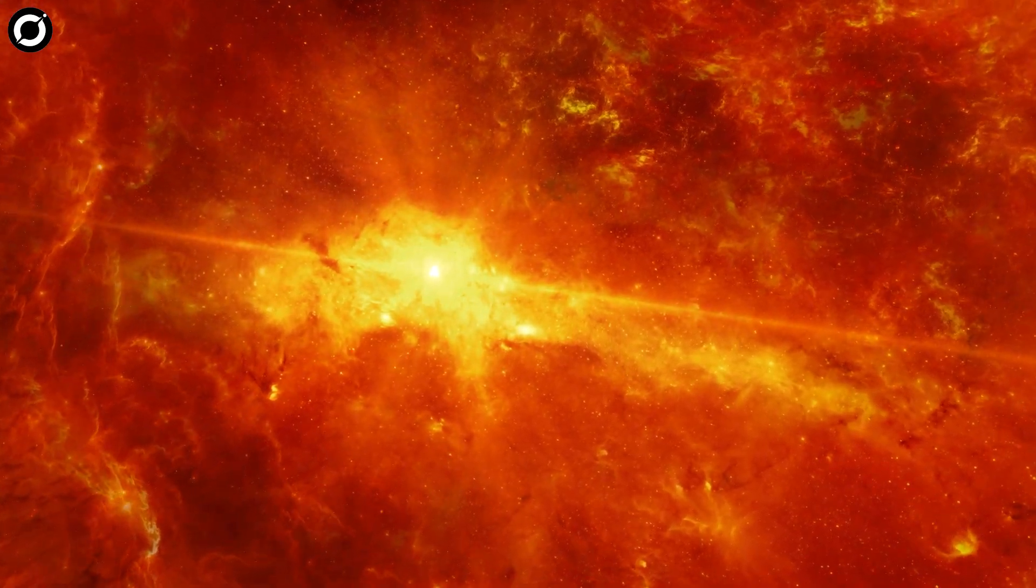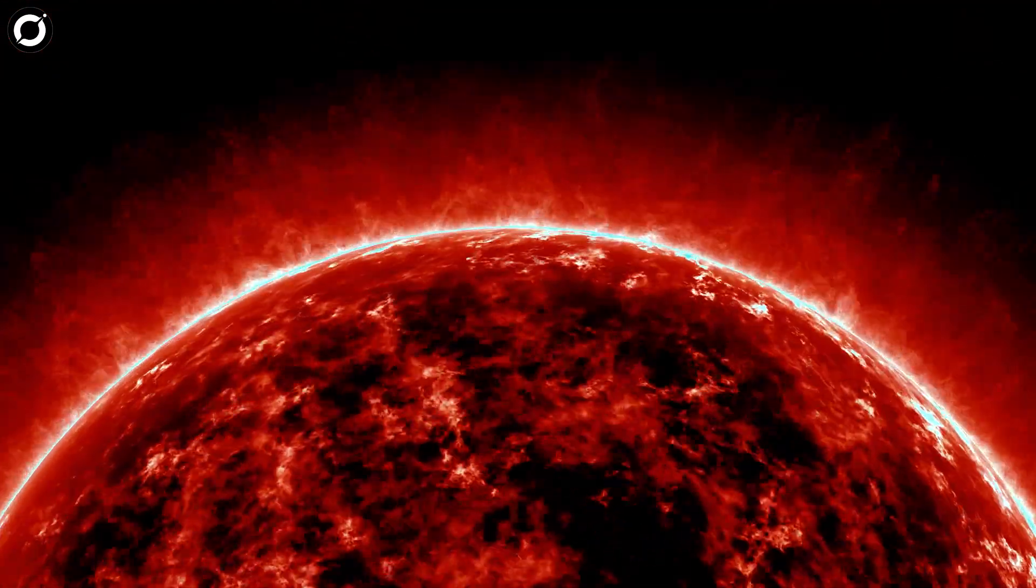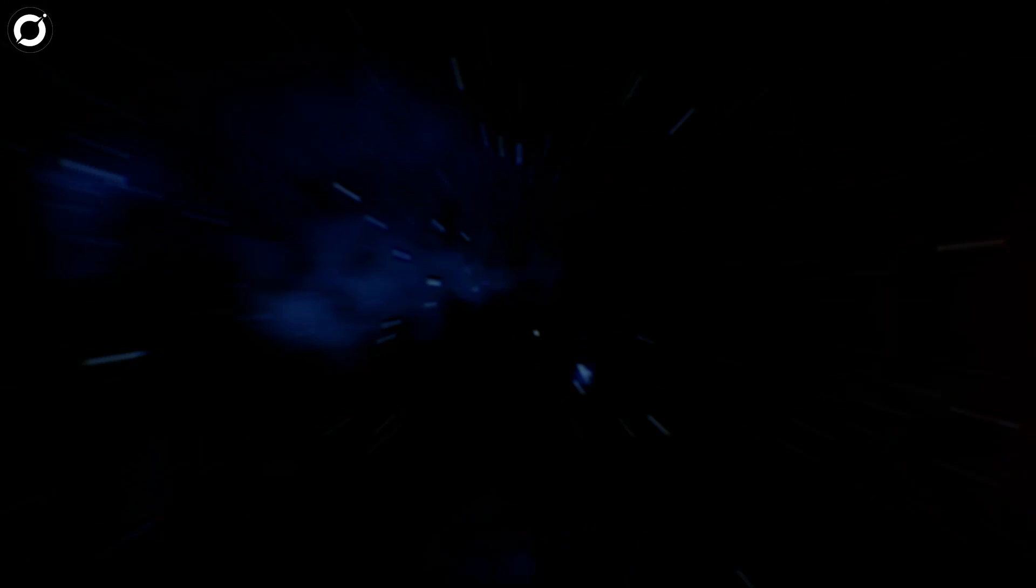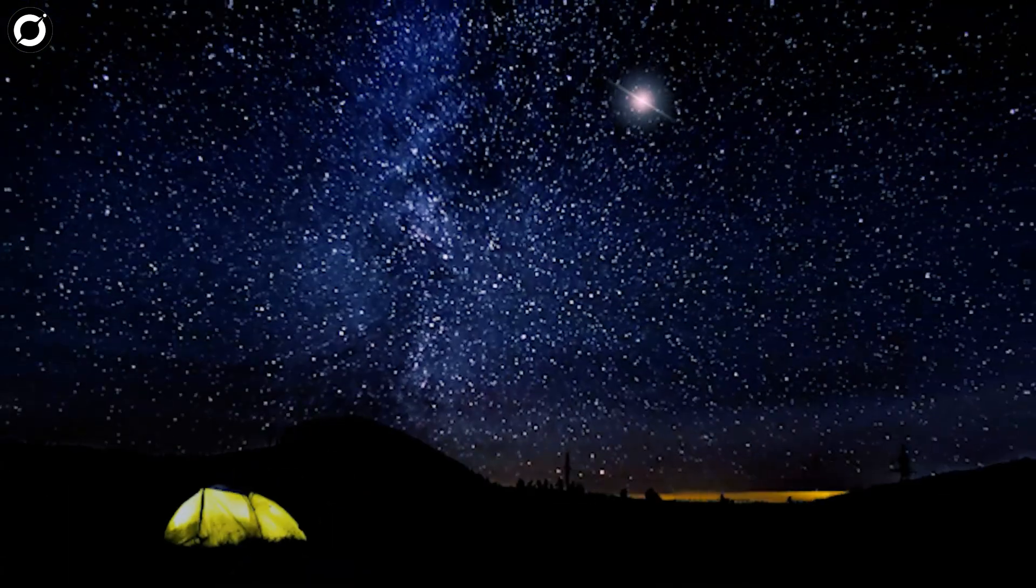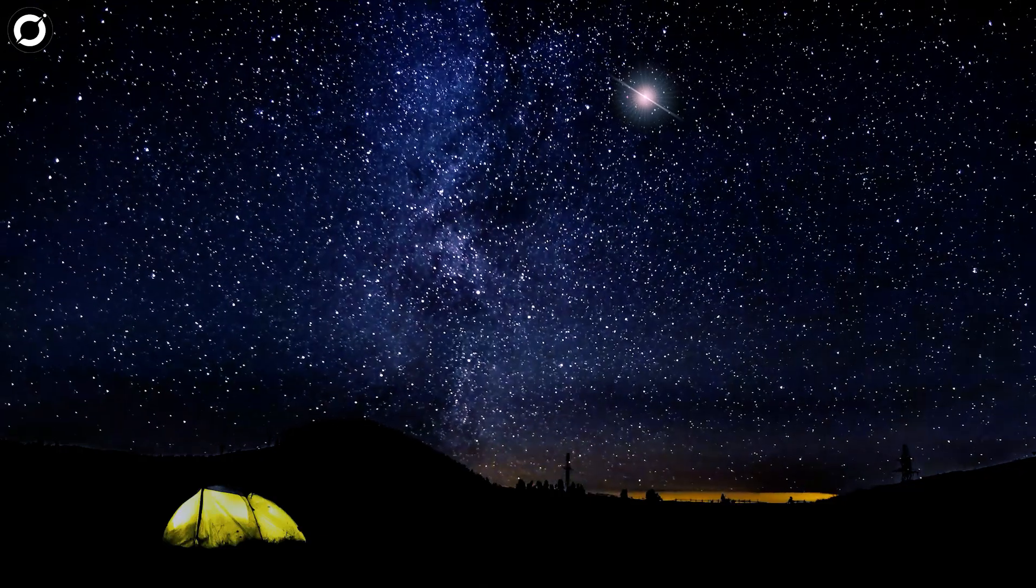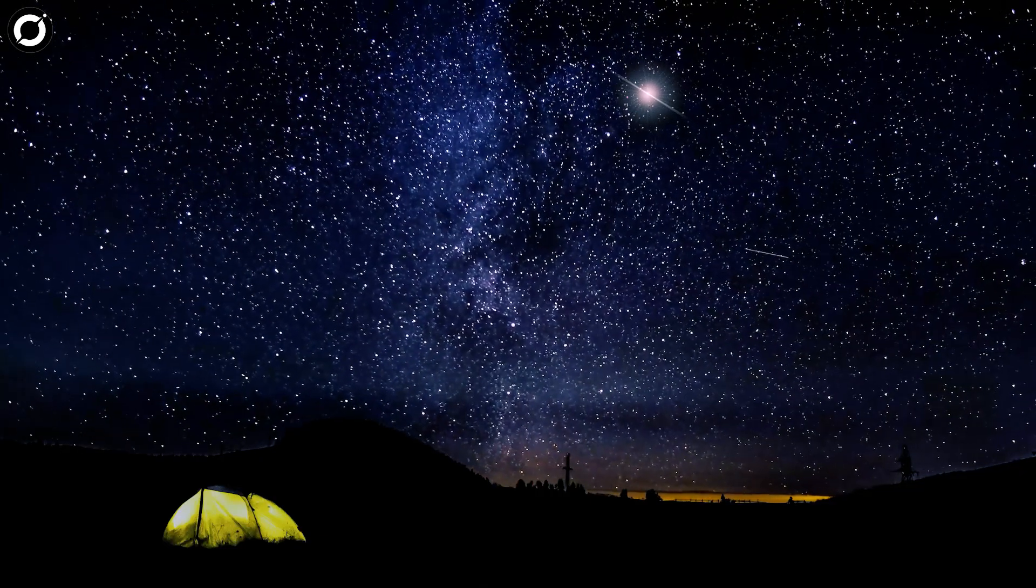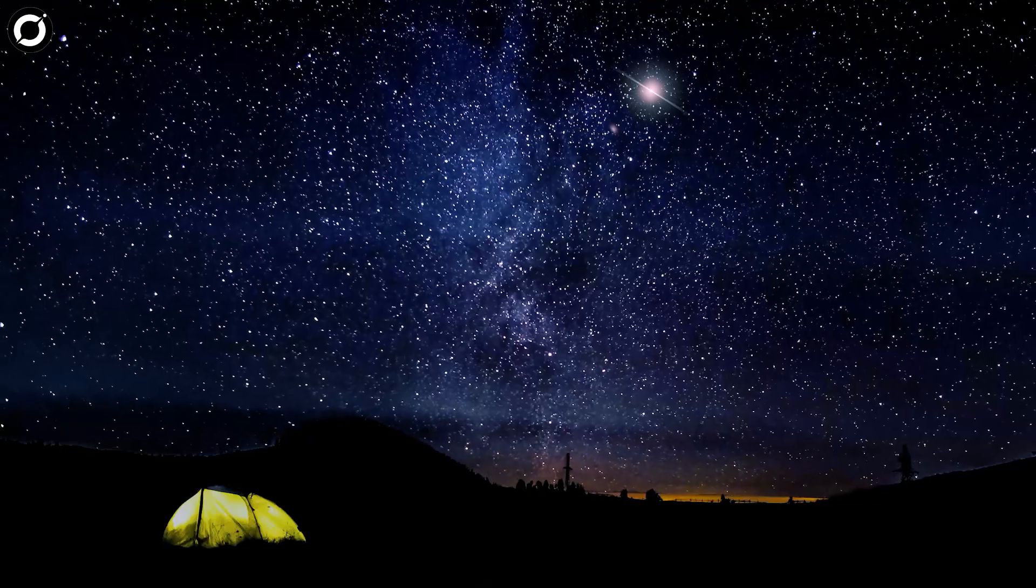Betelgeuse holds the distinction of being a red supergiant, or celestial giant, nearing the end of its life cycle. Approximately 700 times larger than our Sun, this large star radiates a distinctive reddish hue, making it a prominent feature in the night sky.